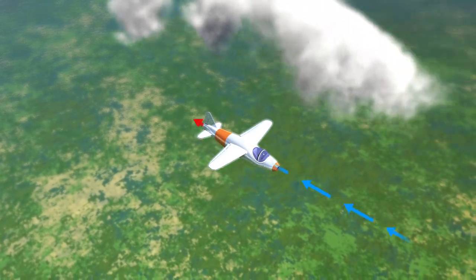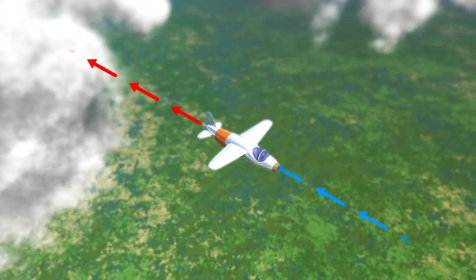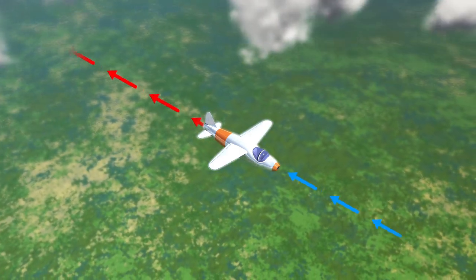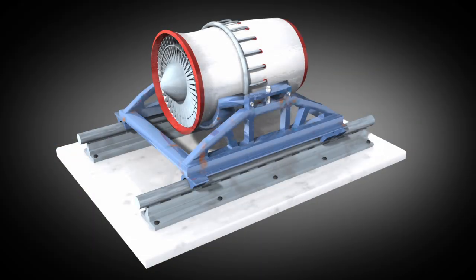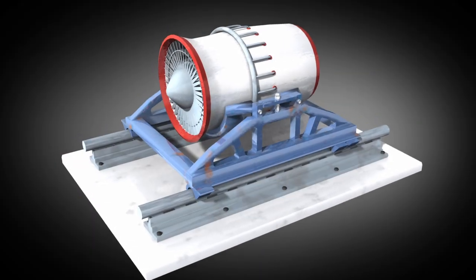Finally, the exhaust gases leave the airplane in a fast-moving stream. This produces thrust. Such a jet engine is called turbojet and was often used until the 1960s.